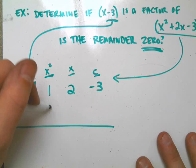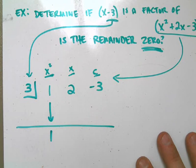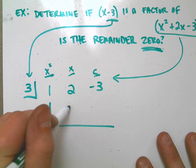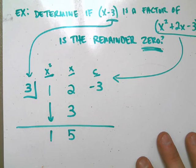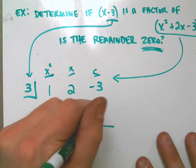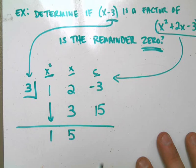Now, I'm going to write a line underneath. You drop the first term, 1. 3 times 1 is 3. 2 plus 3 is 5. 5 times 3 is 15. And 15 minus 3 is 12.